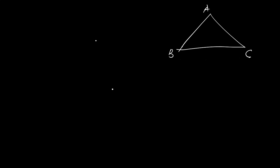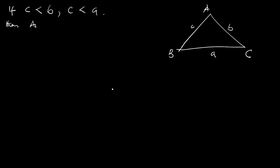If you have a triangle with vertices A, B, C — this is side A, this is side B, this is side C. Now, if side C is less than B and C is less than A, it means that angle C is the smallest.